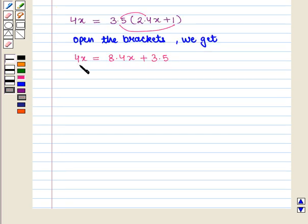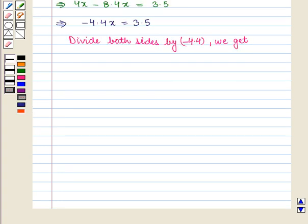Now we bring all the terms of x on one side and the constants on the other side of the equation and we get 4x - 8.4x = 3.5. This implies that -4.4x = 3.5. Now we divide both sides by -4.4 and we get x = 3.5/-4.4 that is equal to -0.79. So x is equal to -0.79.